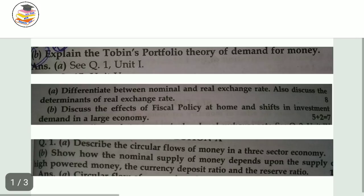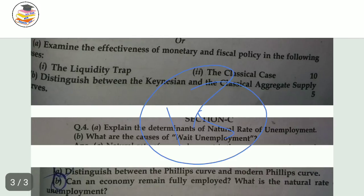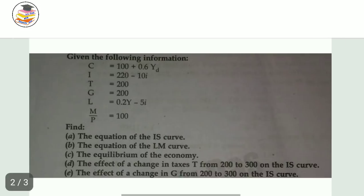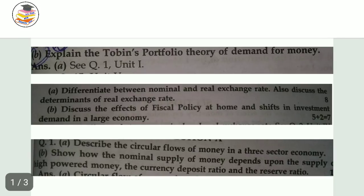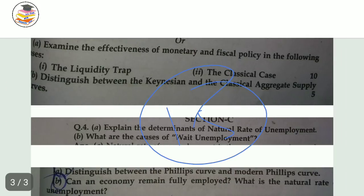So to summarize, these are the important questions: the first question is worth 15 marks, unemployment is very important, and third is Tobin's portfolio theory. Revise the rest of the questions well. As I mentioned in a previous video, reading is a must for theoretical exams — read loudly, four to five times, absorb it into your mind.